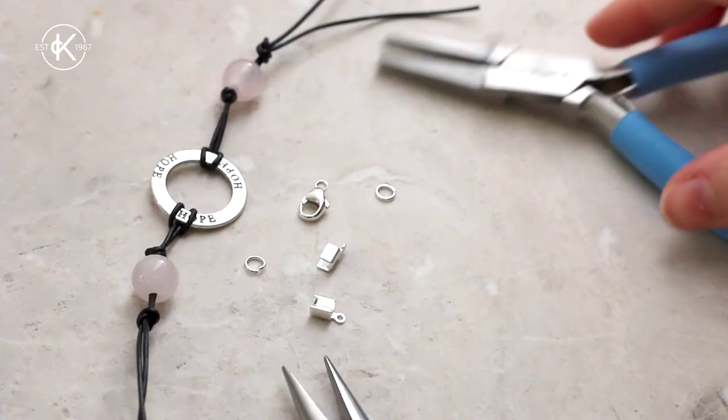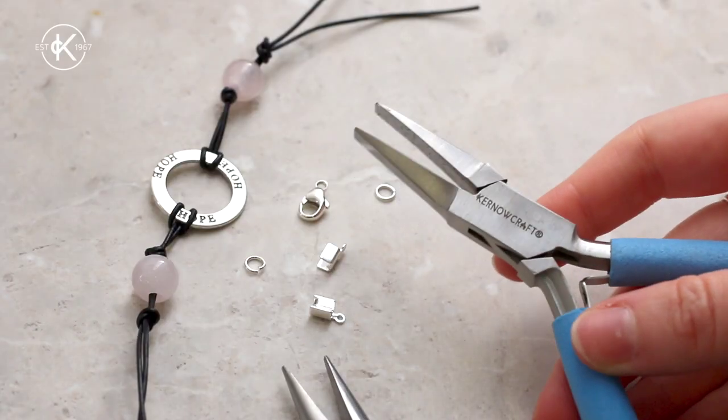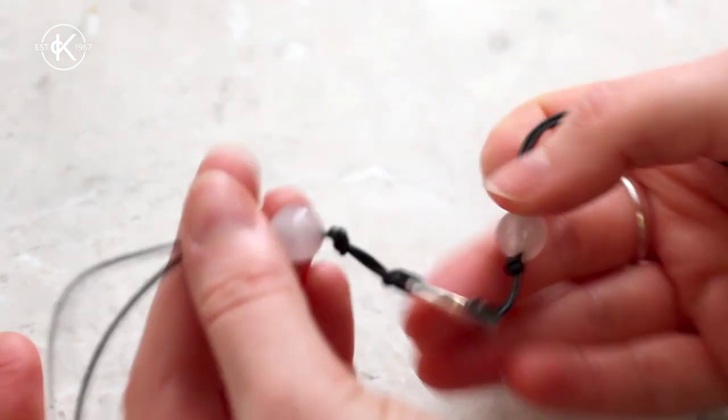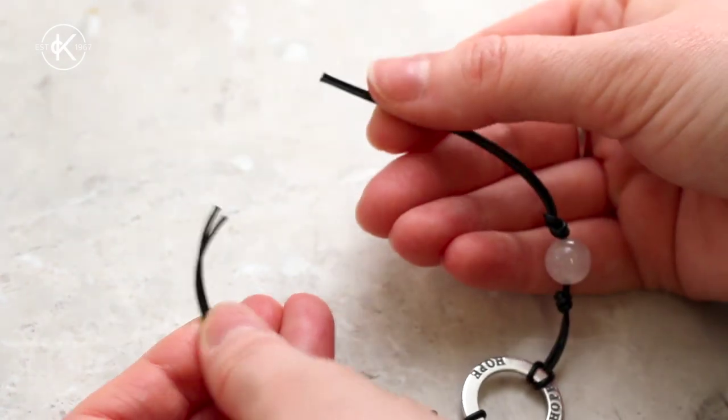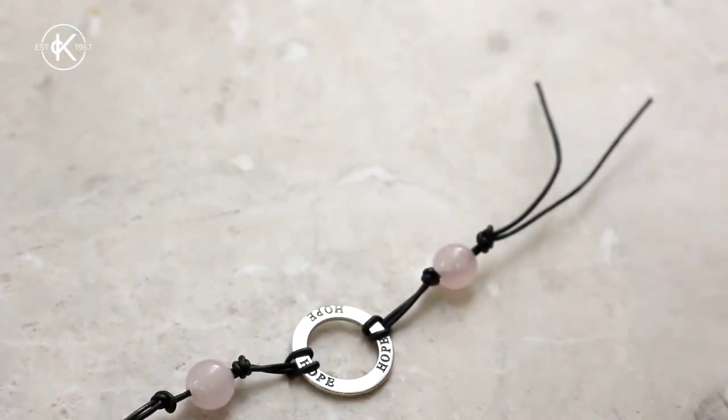They're super easy to use and the only tools you'll need are some flat nose and snipe nose pliers. These cord ends are perfect for using with threads measuring up to three millimeters and in this project we're using our popular one millimeter leather thonging.